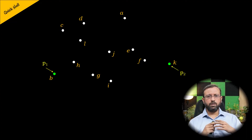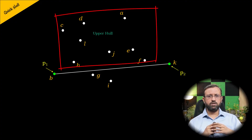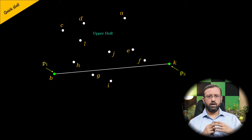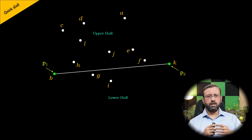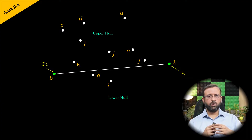The other points in the set are divided based on the line segment between points P1 and P2. All the points to the left of the line segment are known as the upper hull, and all the points to the right are known as the lower hull. Both the upper hull and the lower hull include the points P1 and P2. The convex hull for the upper hull and for the lower hull is computed using the divide and conquer algorithm, and the union of these two convex hulls is the overall convex hull.